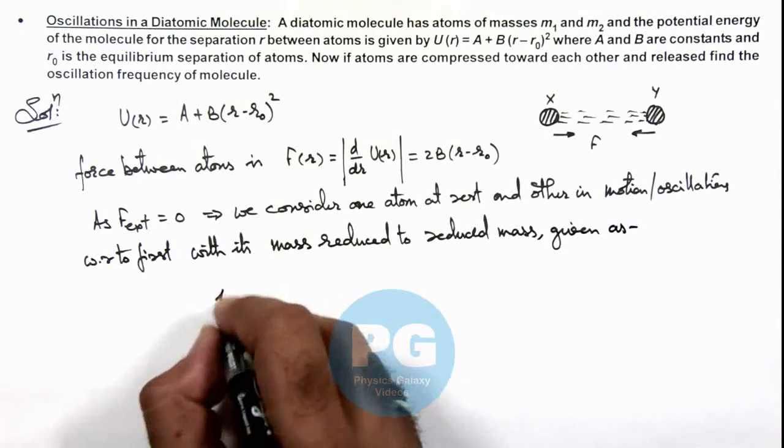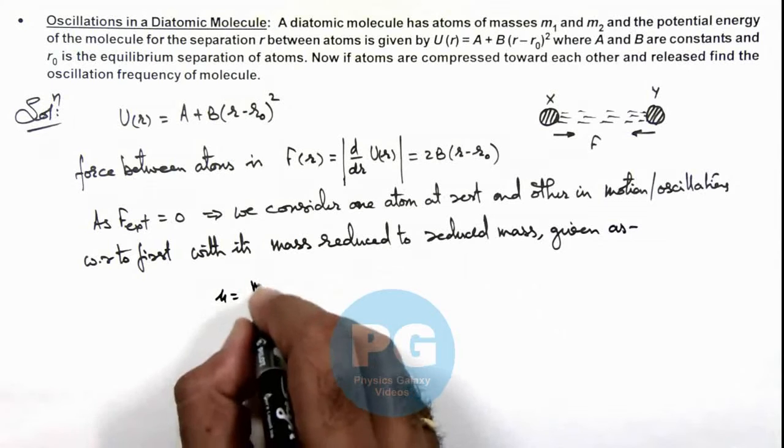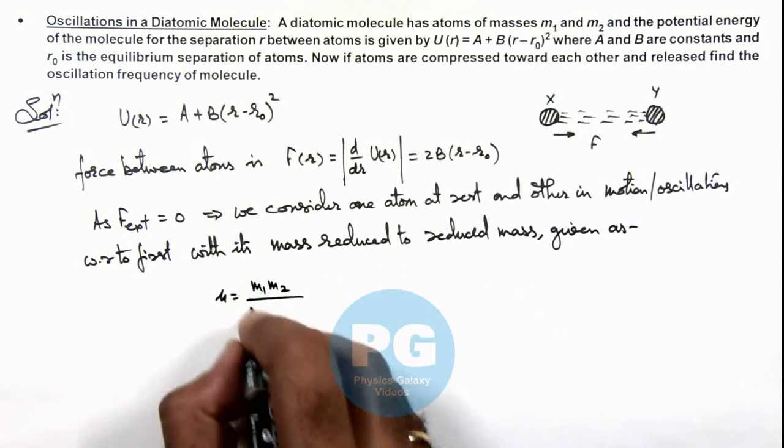Which is given as, here we can write it μ, which is m1·m2 upon m1 plus m2.